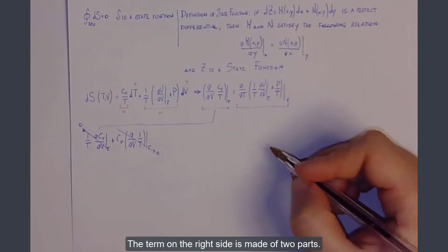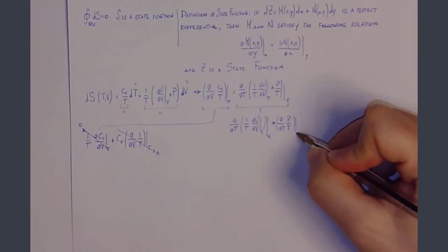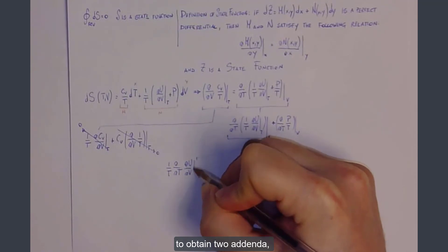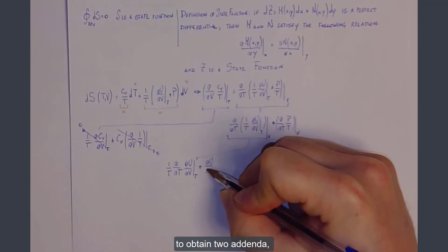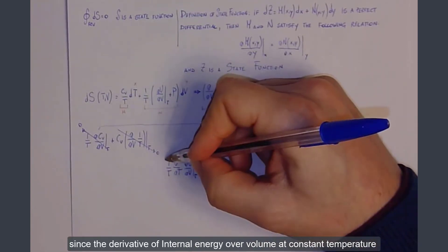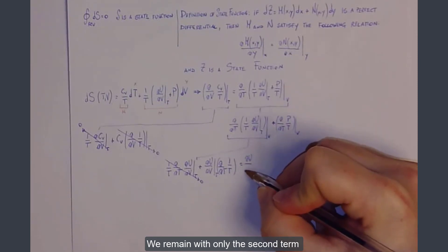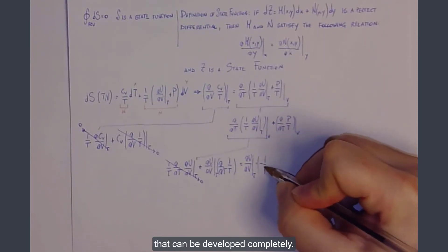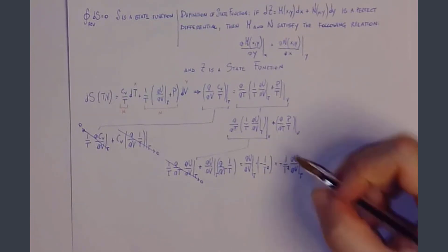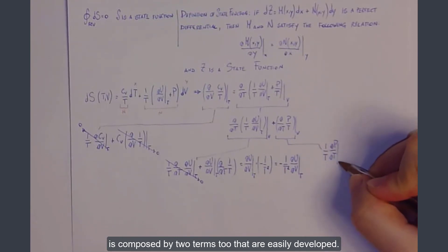The term on the right side is made of two parts. The first part can be developed further to obtain two addenda, one of which is null since the derivative of internal energy over volume at constant temperature is a constant in temperature. We remain with only the second term, which can be developed completely. The second part of the right side term is composed of two terms that are easily developed.